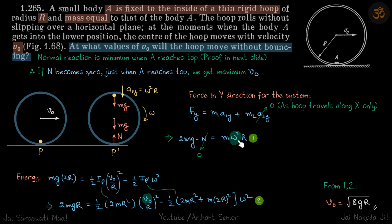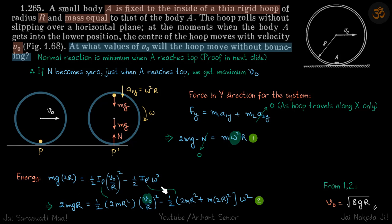For the second equation, we get the value of omega from energy conservation. The work done by gravity equals the change in kinetic energy: mg × 2r = initial kinetic energy minus final kinetic energy.